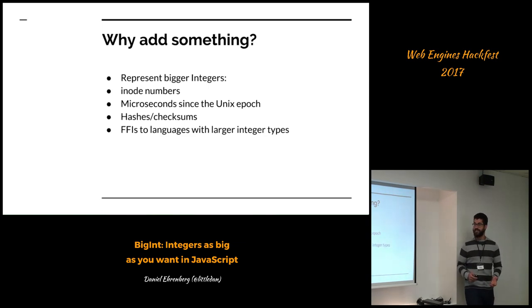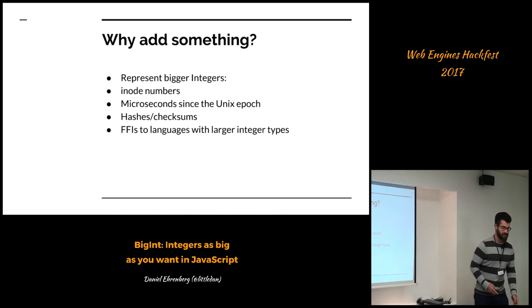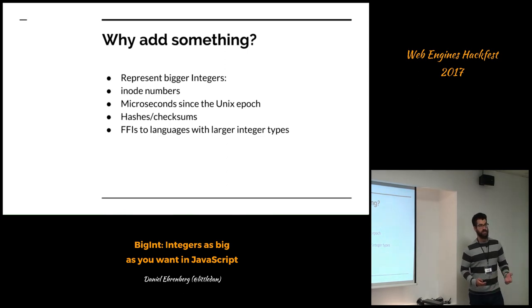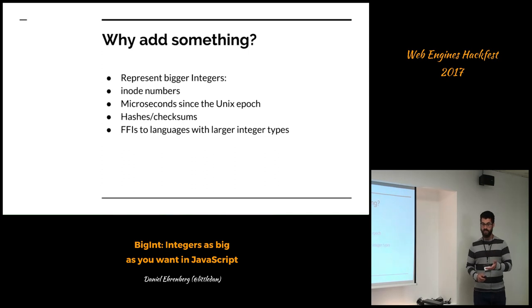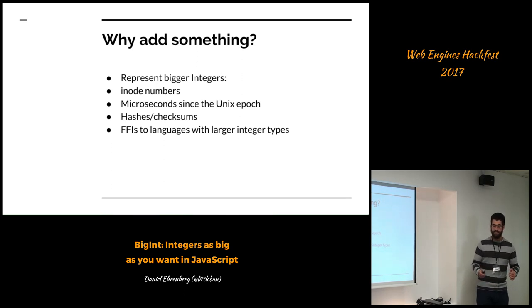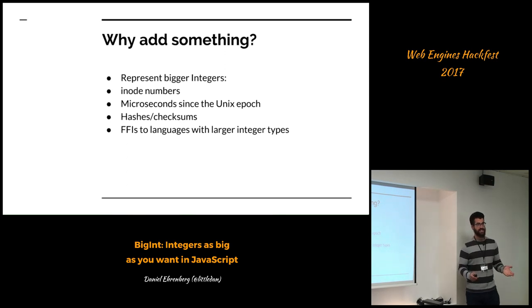Another use case is for FFIs to other languages with larger integer types. Numbers which can be even bigger than 64-bit range that you might want to represent are things like hashes or checksums when you're calculating or passing them around. For users, you might want to represent the number of microseconds, and there's just no way to map these to numbers without losing data. The current WebAssembly design is that if you export a function which has 64-bit integers as an argument or return value, it will throw an exception when you call the function, which is not great. There are also 64-bit values on the WebAssembly heap that you can't generally read or write if they're that big.